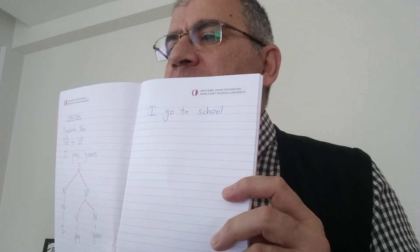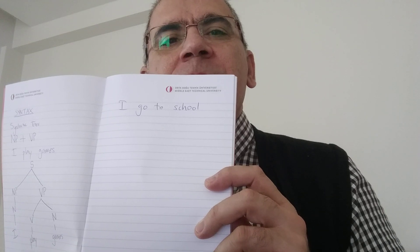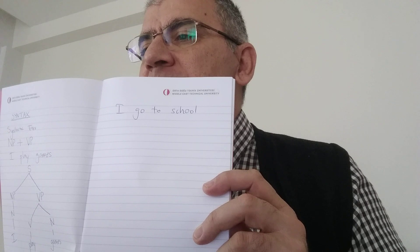I go to school. This is another sentence. We have one more word in this sentence, which is to. What is to? To is a preposition.